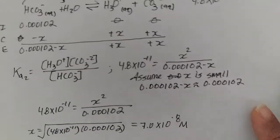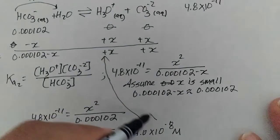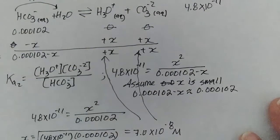7.0 × 10^-8 molar. So that is going to be our x, which will be H3O+ concentration and then our concentration of CO3^2-.